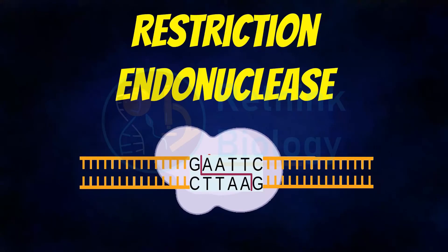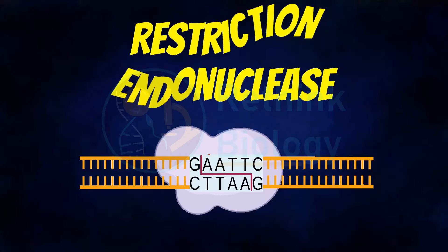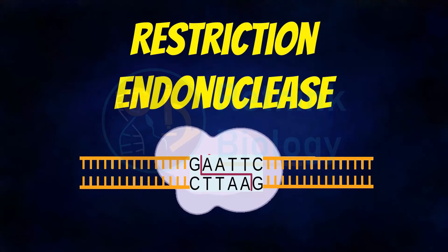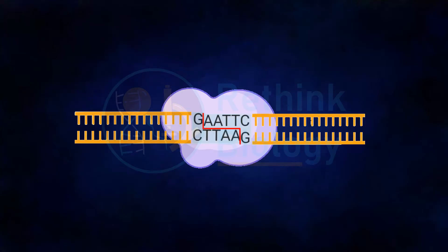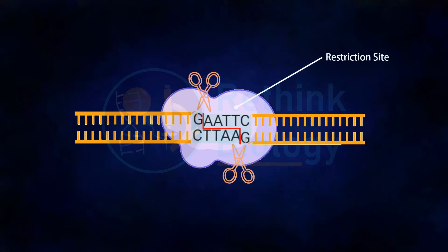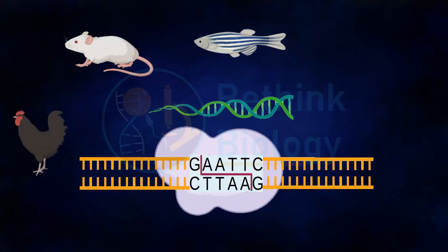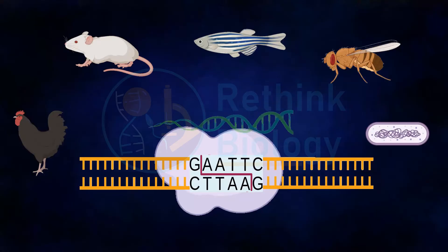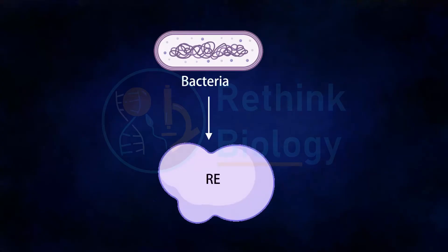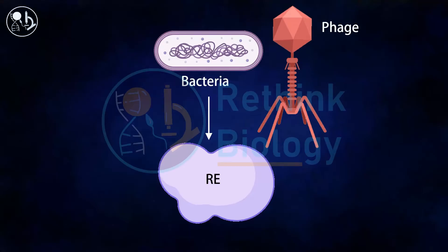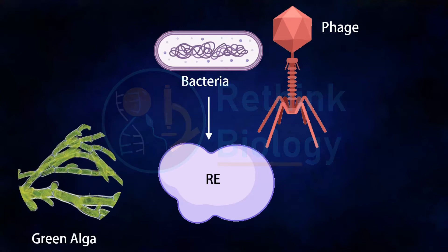Hello everyone, welcome back to our channel. Today we are going to discuss restriction enzymes, or restriction endonucleases. As the name suggests, these enzymes are a group of endonucleases which can cleave or cut double-stranded DNA at a specific nucleotide sequence called the restriction site. The cleaving activity can act irrespective of the species and source of the DNA. They are mostly produced by bacteria as a defense mechanism against phages — these enzymes act like scissors, cutting up the DNA of the phage and thereby inactivating it.